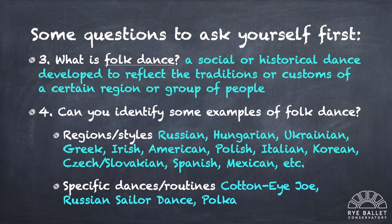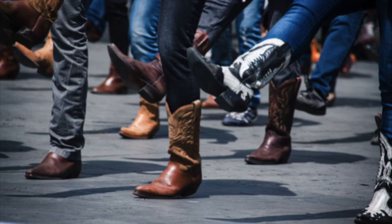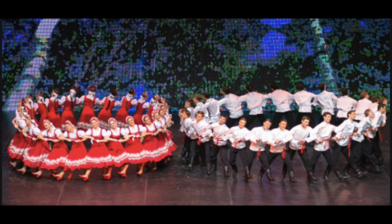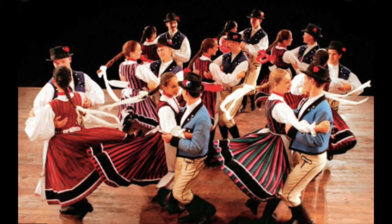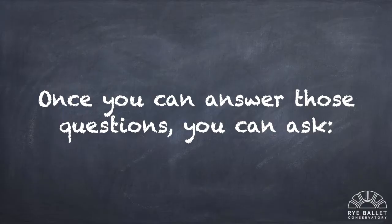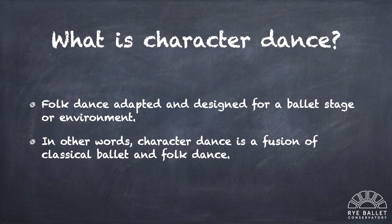Are you able to identify any specific dances or routines native to the US? Believe it or not, dances like the Cotton Eye Joe can be considered American folk dance, among others — like the Russian Sailor Dance from Russia or the Polka from Poland and the Czech Republic. So now that we have a better understanding of ballet and folk dance as unique dance forms, we can answer the question: what is character dance? Character dance can be defined as folk dance adapted and designed for a ballet stage or environment. In other words, character dance is a fusion of classical ballet and folk dance.